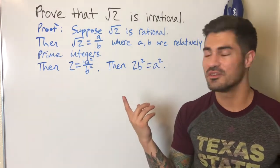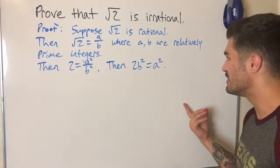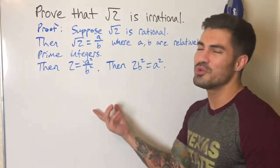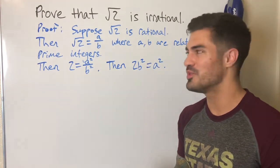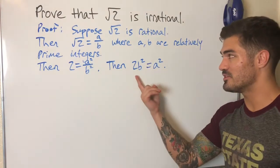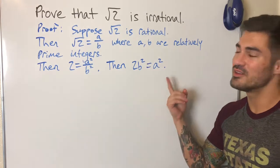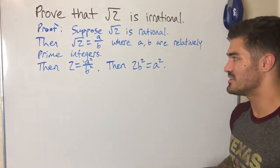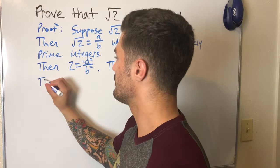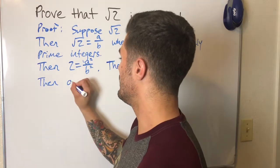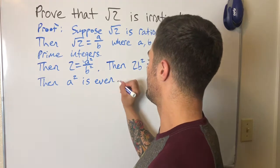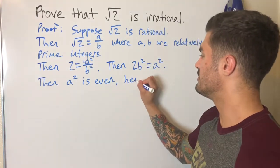Since a² is even, that means a is even. You could do a little lemma to show why that's true, but we can take that as trivial for this proof. So: a² is even, hence a is even.